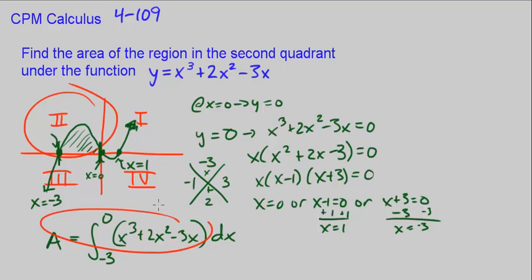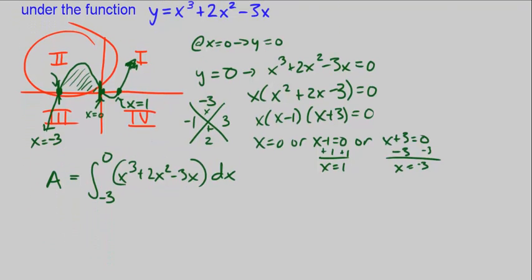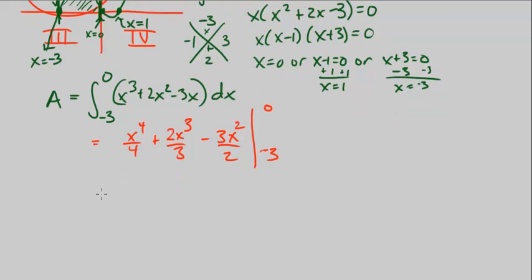Alright, so that is the area. Now let's compute it. I guess one way is to use our calculators, but let's do it by hand. This is just going to be the antiderivative using the reverse of the power rule. So it's going to be x to the 4th over 4 plus 2x cubed over 3 minus 3x squared over 2. We don't add c because this is a definite integral. We write the boundary from negative 3 to 0.